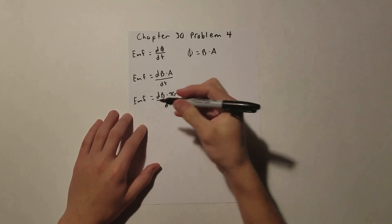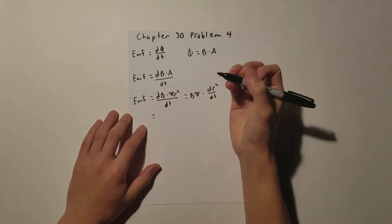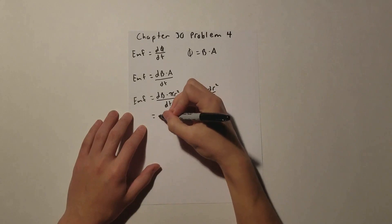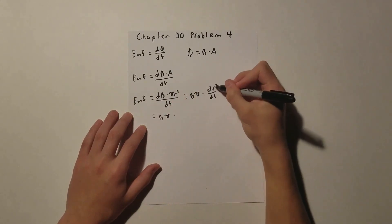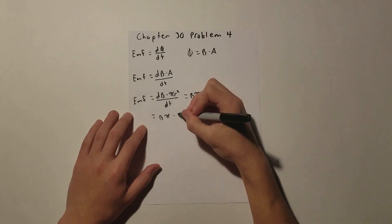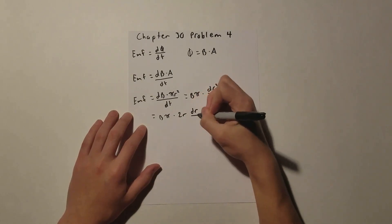And then we can take the derivative. So this equals B pi times, and the derivative of R squared is 2R, so 2R dr dt.